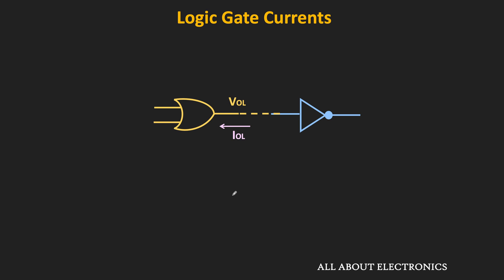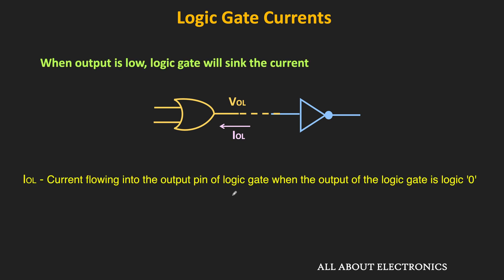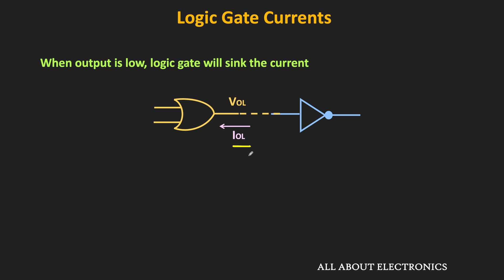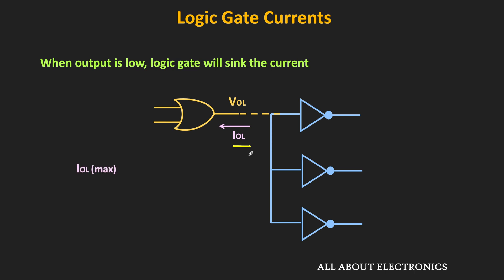Similarly, when the output of the logic gate is low, then it will sink the current — that means from the load, the current will flow into the logic gate. This current is known as IOL, which defines the output current of the logic gate when the output is low. Once again, as the number of loads increases or as the number of logic gates connected at the output increases, the value of IOL will also increase. So in the datasheet, the maximum value of IOL is specified — that is the maximum sink current of the logic gate when the output is low.